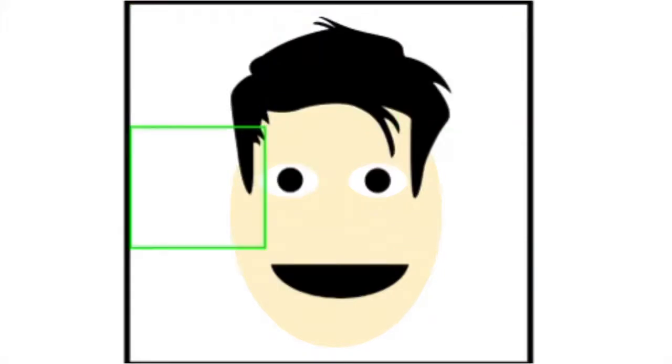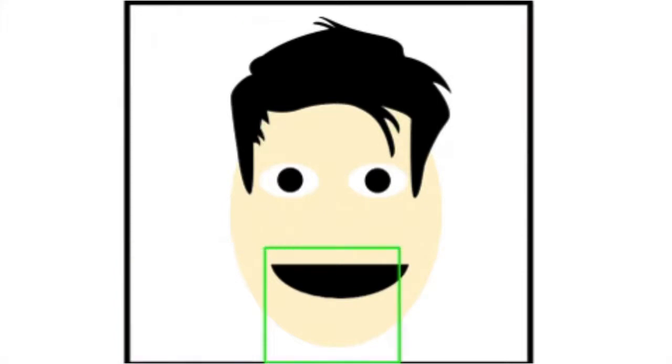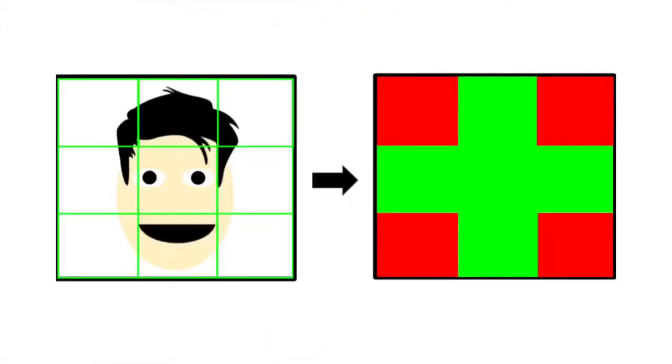So the algorithm will continue to repeat this process of finding the features of a face until it has mapped the entire face. Every time the algorithm detects a face, it marks where it has found it on the picture and keeps repeating this process until the entire face is checked.